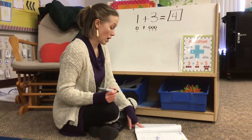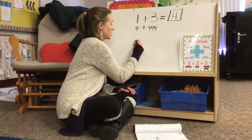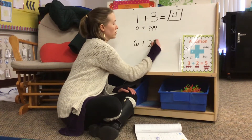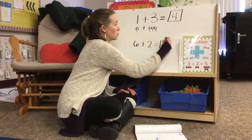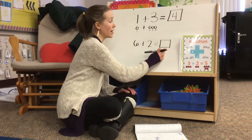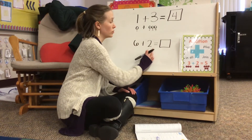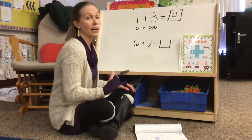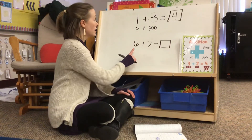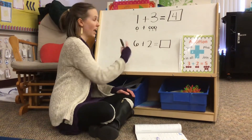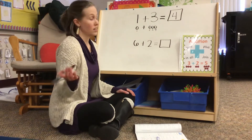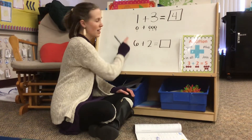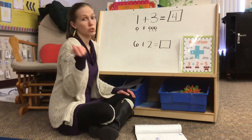Another problem is six plus two equals blank. We have to find out what six plus two is equal to, or the same as. So again I'm going to draw a picture to help me. Here's the number six — I can really draw six of anything. Up here I chose to draw circles; this time I might draw triangles.